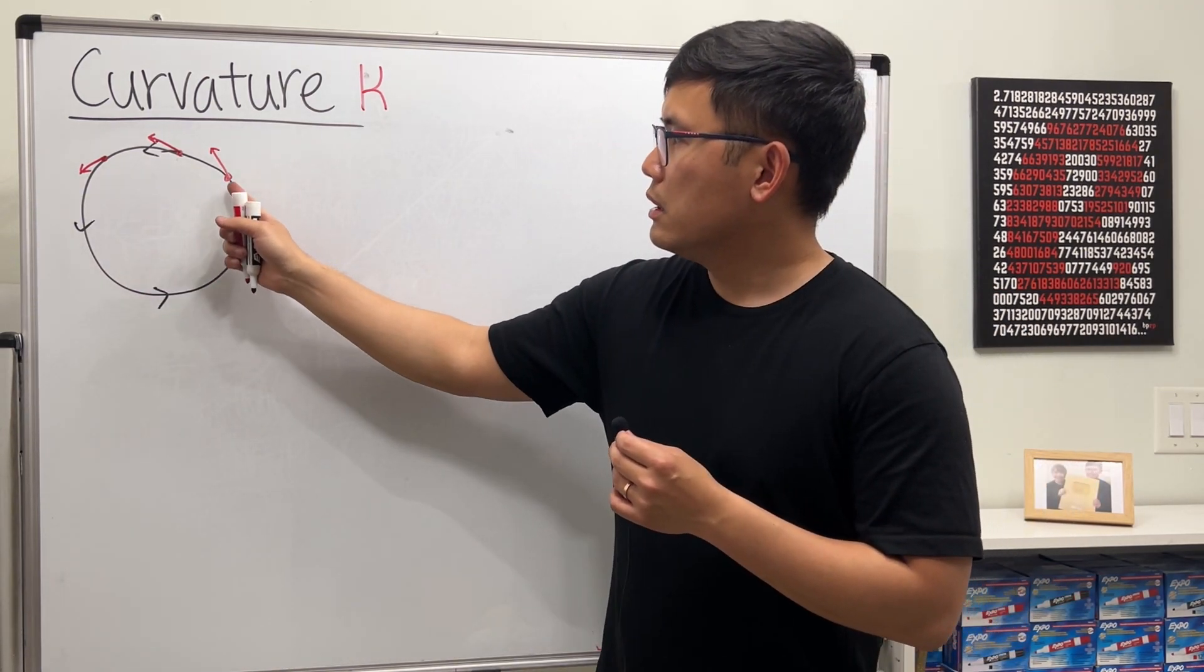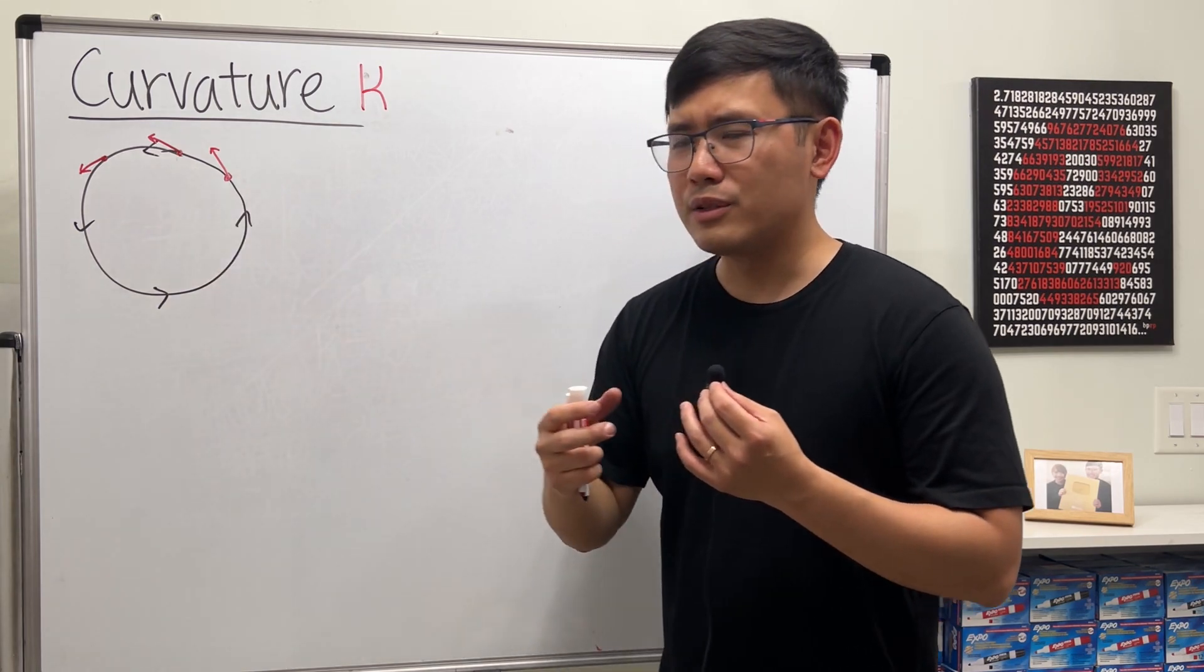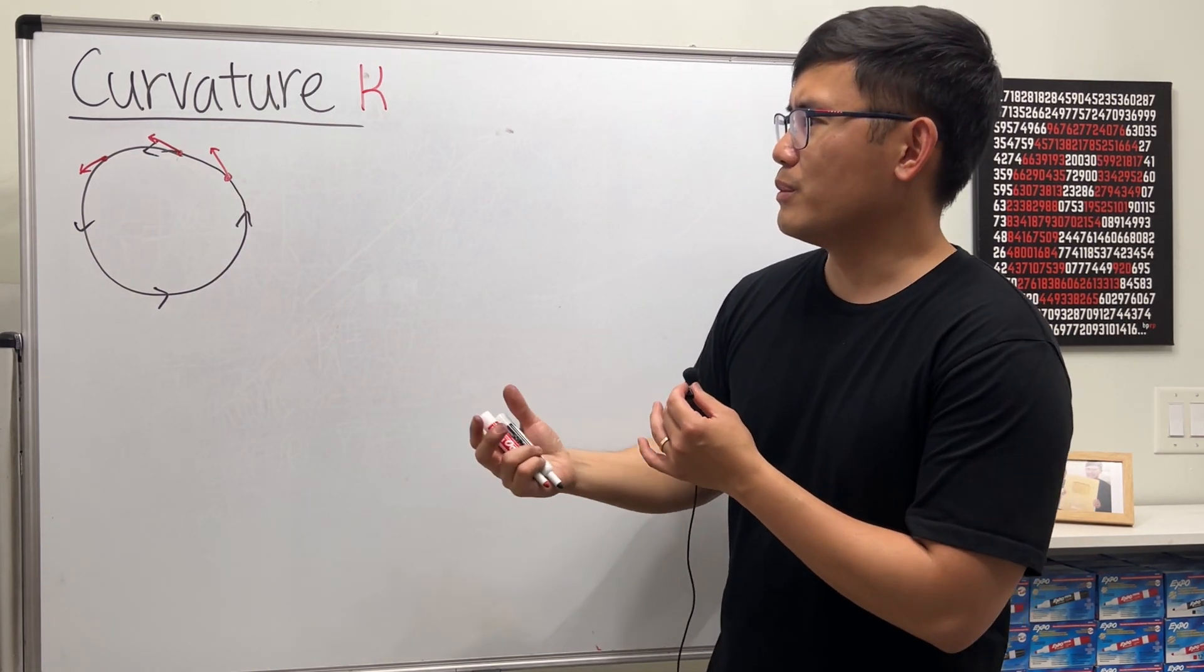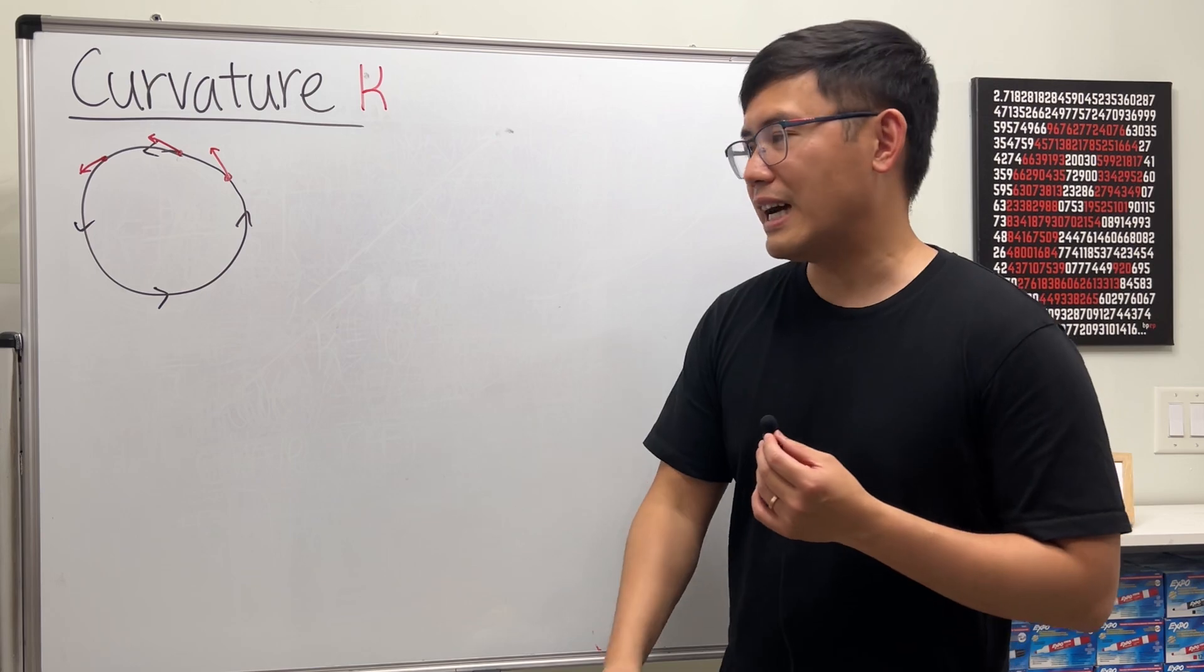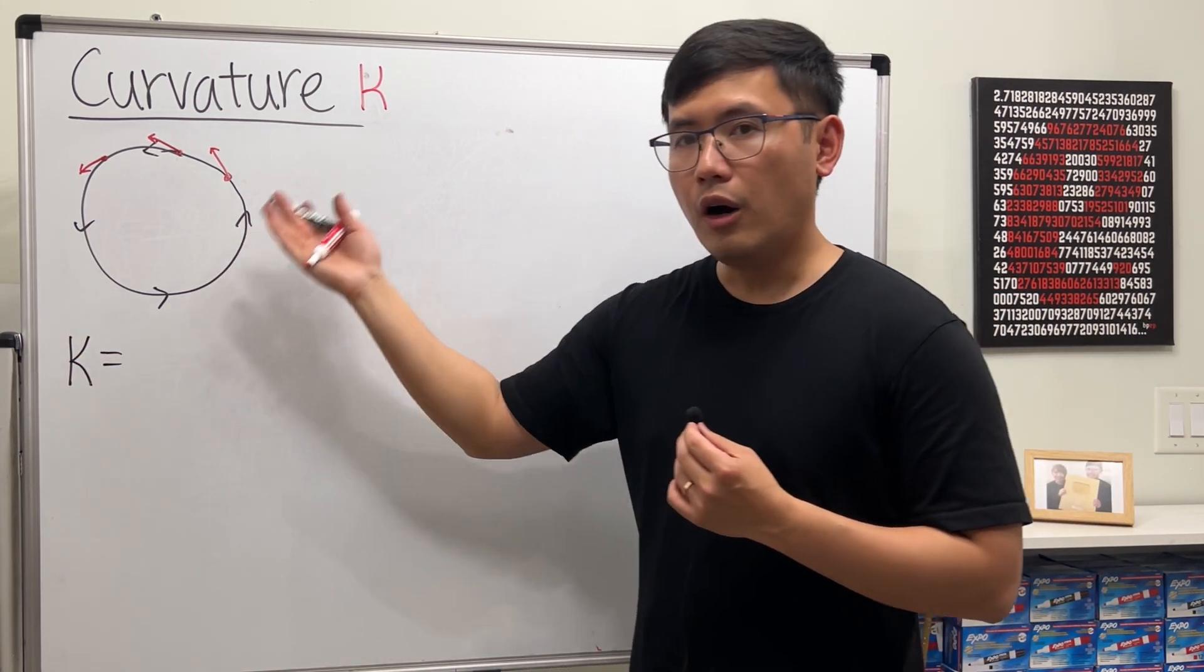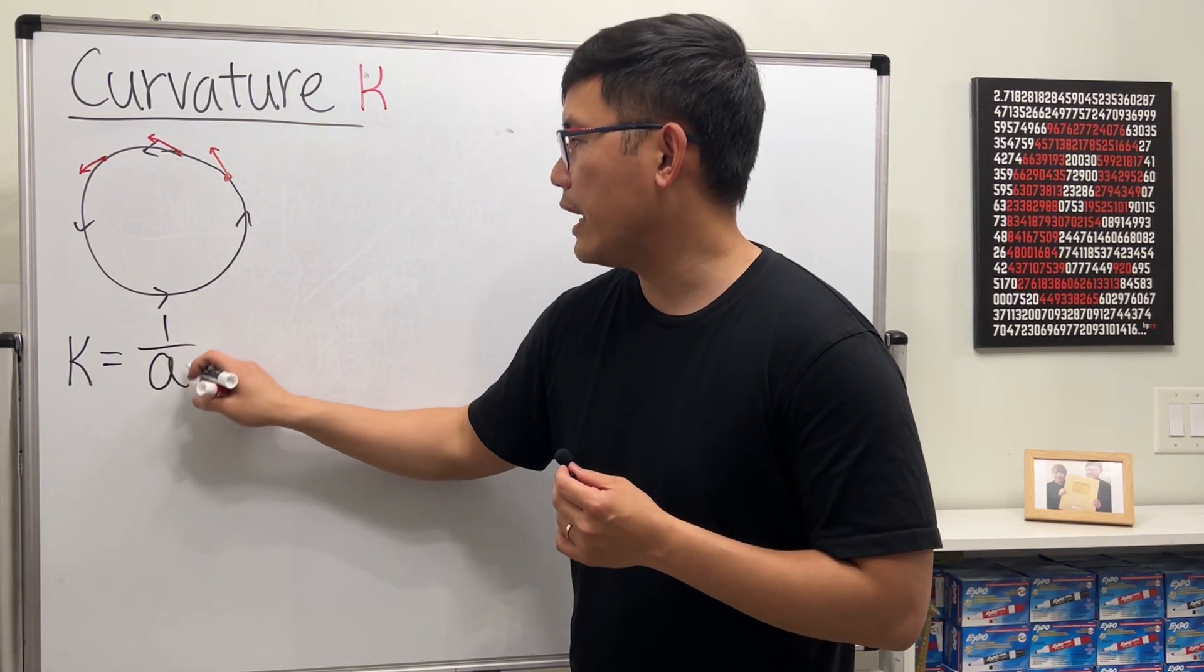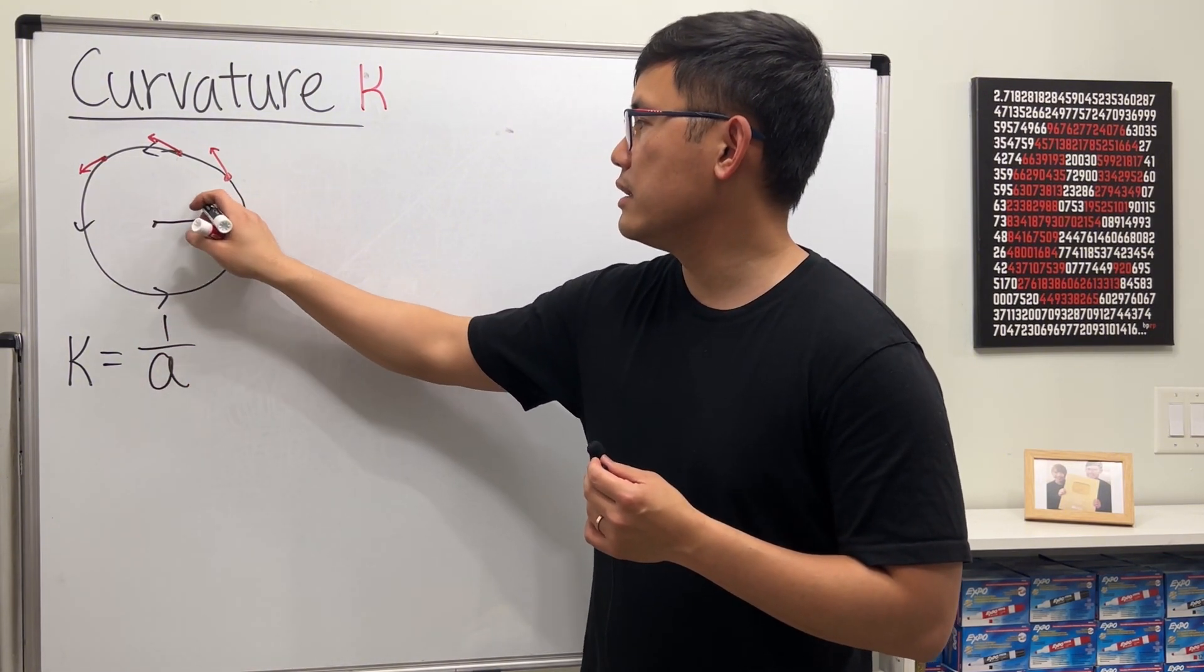As you can see, all of these have the same amount of bend. They curve the same amount, and it's true that the curvature—we use kappa for the notation—over a circle depends on the radius. It's just one over a, where a is the radius of the circle.